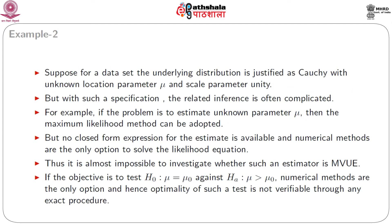Suppose for a data set the underlying distribution is justified as Cauchy with unknown location parameter mu and scale parameter unity. With such a specification, the related inference is often complicated. If the problem is to estimate the unknown parameter mu, the maximum likelihood method can be adopted, but no closed-form expression for the estimate is available and numerical methods are the only option to solve the likelihood equation. Thus, it is almost impossible to investigate whether such an estimator is a minimum variance unbiased estimator or not. On the other hand, if the objective is to test the null hypothesis mu equal to mu-naught against the alternative mu greater than mu-naught, numerical methods are the only option, and hence optimality of such a test is not verifiable through any exact procedure.